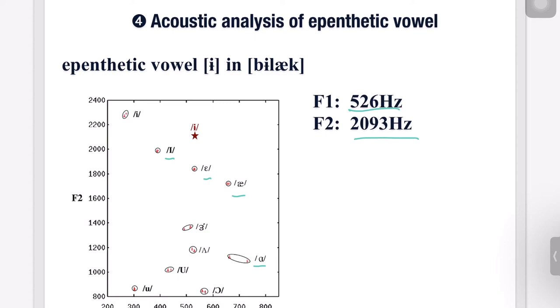When it comes to the backness of the epenthetic vowel ɨ, and from its F2 minus F1, 1567 Hz, we can assume that it is a central vowel. Indeed, the epenthetic vowel ɨ is classified as a high central vowel located between i and ʌ.